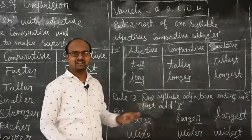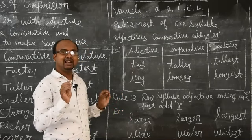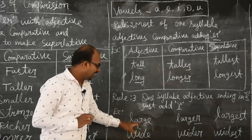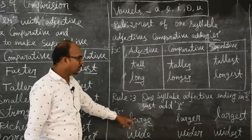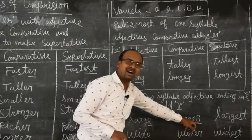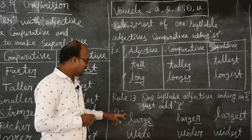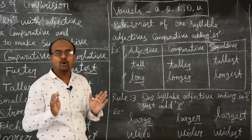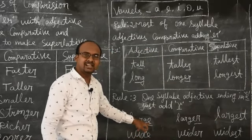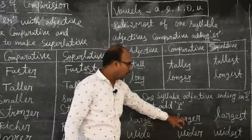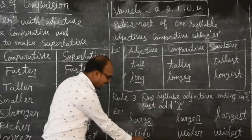The third rule: a one-syllable adjective ending in E — just add R. So when a one-syllable adjective ends in E, for example 'large,' this adjective ends in E. When we want to make comparative, we just add R — not ER. Because E is already there, we only need R. So: large, larger, largest.